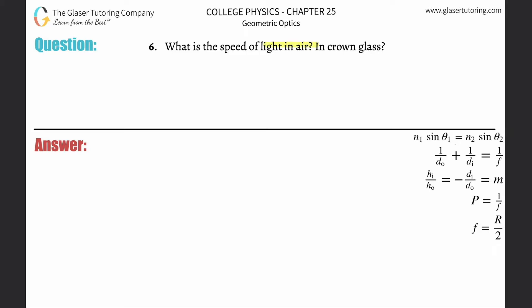Number six, what is the speed of light in air and then in crown glass? Check out number five, we already developed this formula that the velocity of light in air will be equal to the speed of light in a vacuum divided by the index of refraction of air.